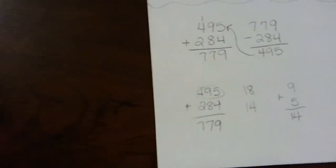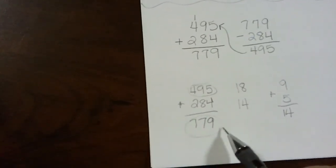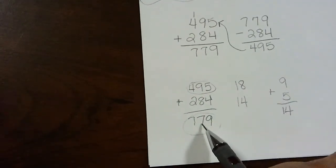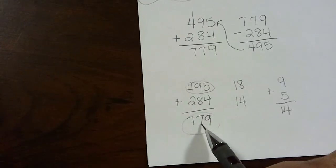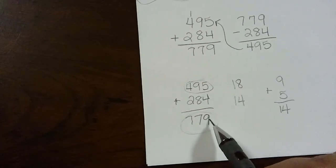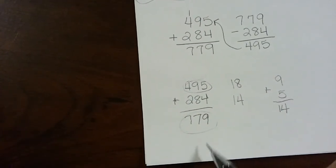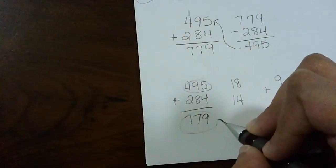Okay. Now, you want to find the digital root of this. 7 plus 7 equals 14. Plus 9 equals 23.